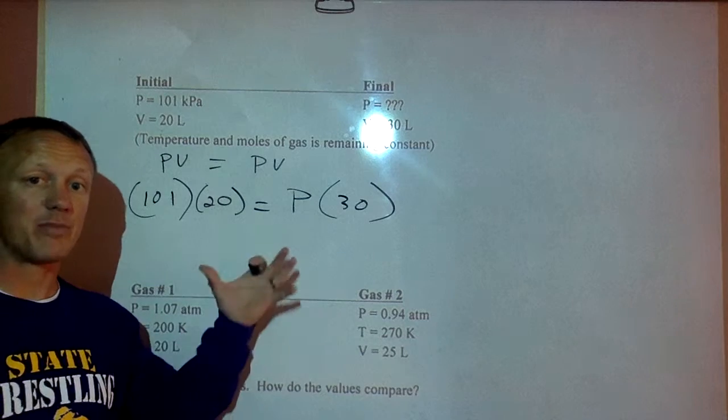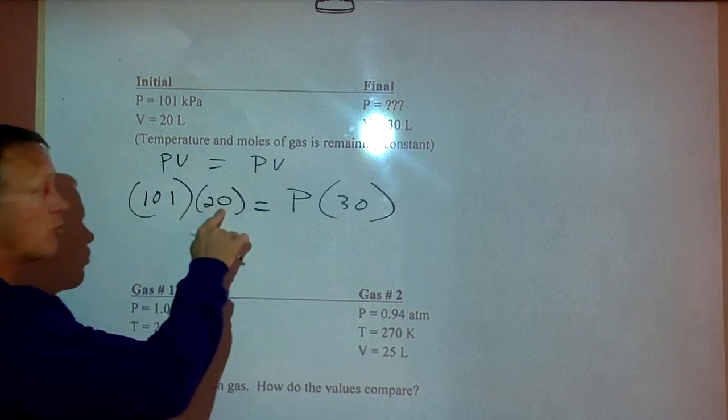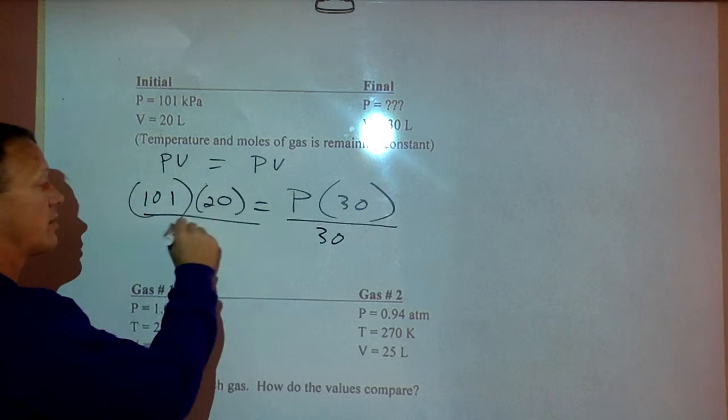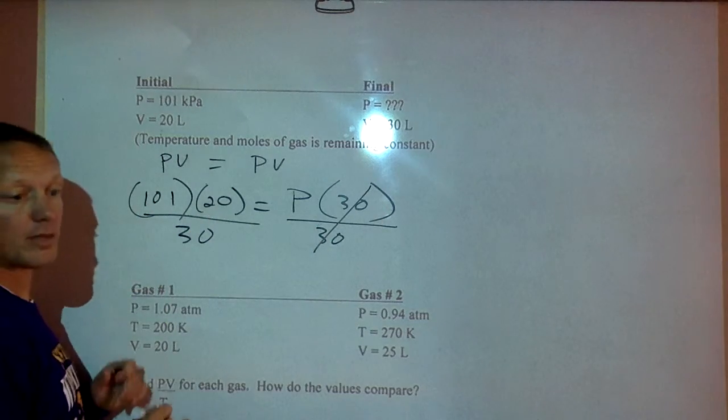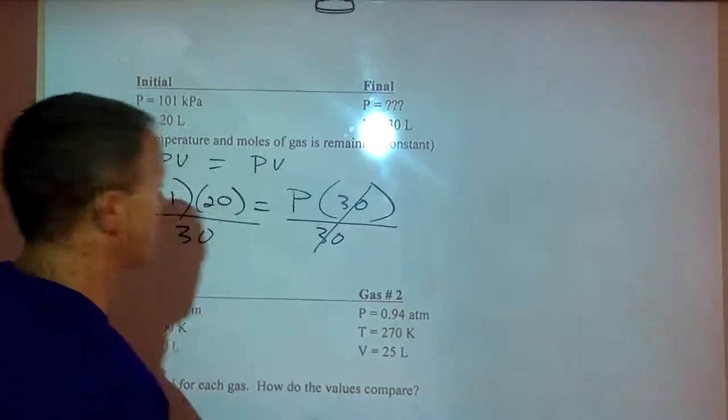Since our gas got bigger, it had to be less pressure on them. I'm going to multiply and divide by 30 to get the variable by itself. So I multiply those two and divide by 30. Our pressure there is 67.3 kilopascals. Pressure had to go down.